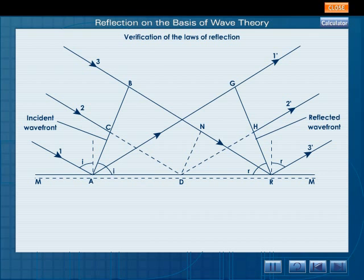The right triangles AGR and ABR are congruent because they have the same hypotenuse and BR is equal to AG. Here the angle of incidence I is equal to angle BAR and the angle of reflection R is equal to angle GRA.